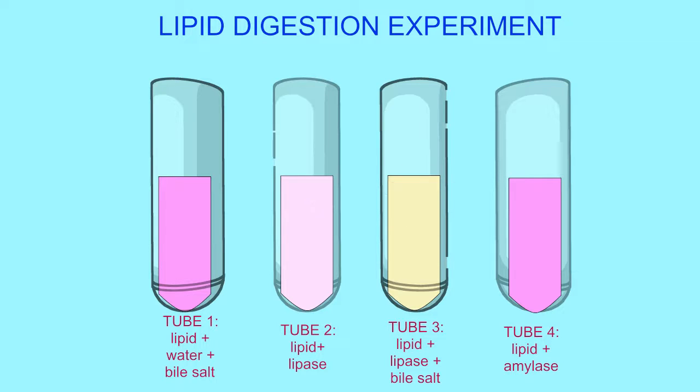While there is digestion of the lipid triglycerides in both tubes two and three to the fatty acids which change the color, this color change is far greater in tube three.